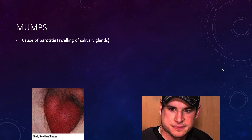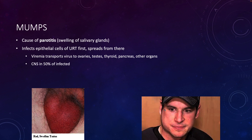Our next paramyxovirus is mumps. Mumps causes swelling of the parotid glands, the salivary glands, so you get this really characteristic big lump on the face — that's why it's called mumps. There are other areas of the body that can be affected. One of the more common areas besides the salivary glands is actually the testes.